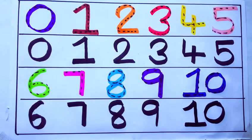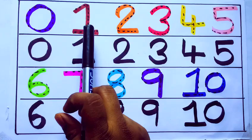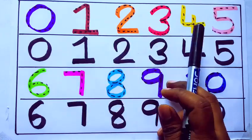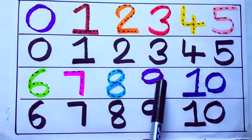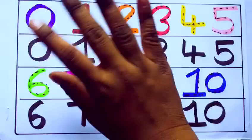Let's count learning numbers: 0, 1, 2, 3, 4, 5, 6, 7, 8, 9, 10. Okay, bye kids.